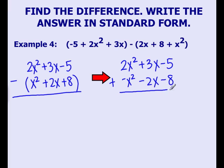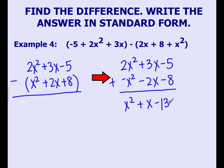So essentially, we have changed this subtraction question to an addition question. Now add vertically. 2x squared plus negative x squared is x squared. 3x plus negative 2x is positive x. And negative 5 plus negative 8 gives us negative 13. Therefore, the difference of these two trinomials is x squared plus x minus 13. Thanks for watching!